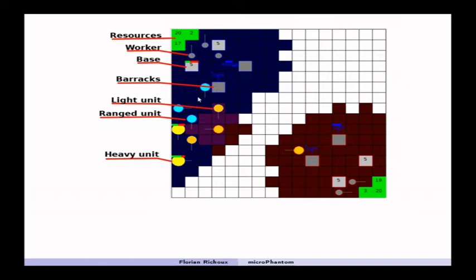The barracks is used to produce military units. So you have a light unit and a ranged unit in blue, which is the only unit able to attack at distance, and the heavy unit, a large yellow unit.